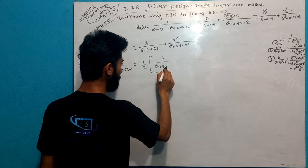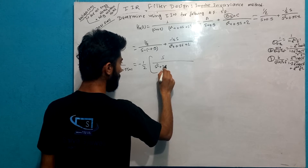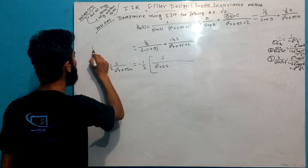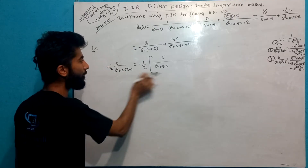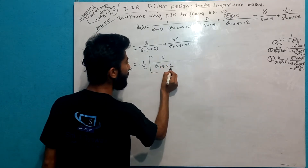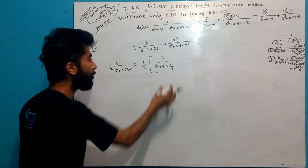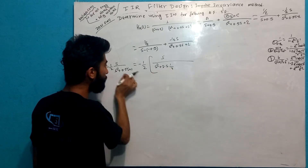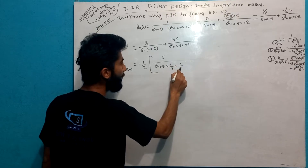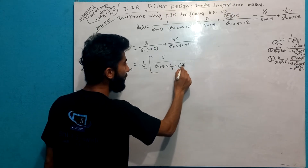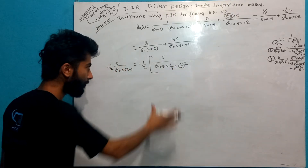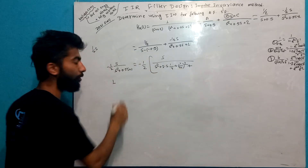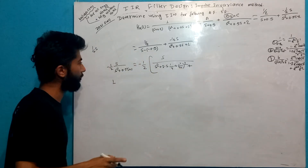Let's start with S squared plus 2 times 0.5 times S. This S value is 0.5, so we have 1 by 2 times S. Then 1 by 2 S plus 1 by 4 squared gives us 1 by 2 S. So this is exactly equal to this expression.